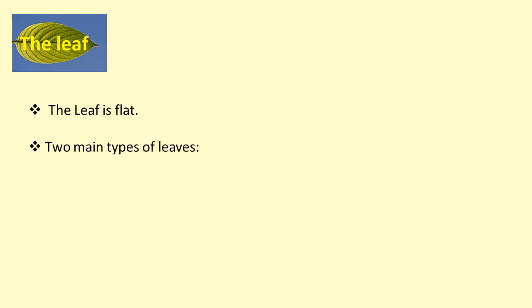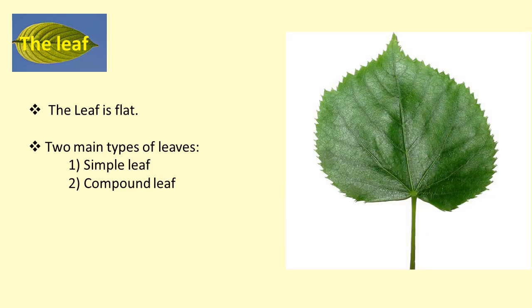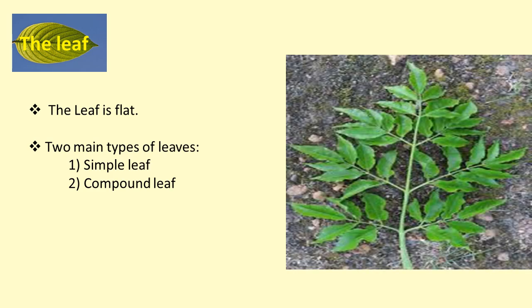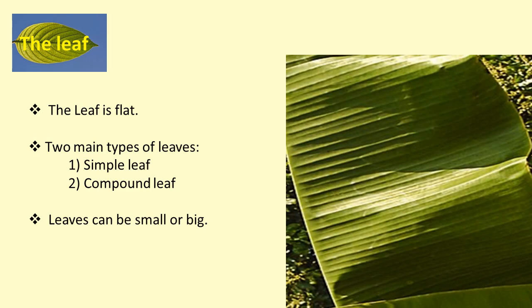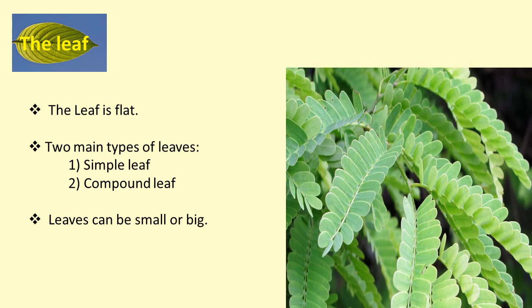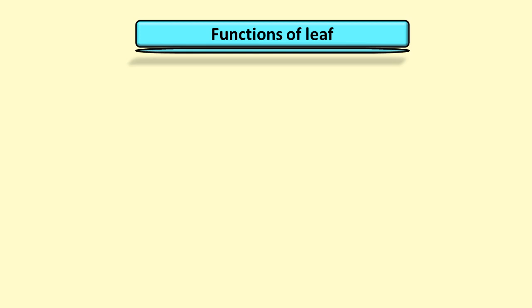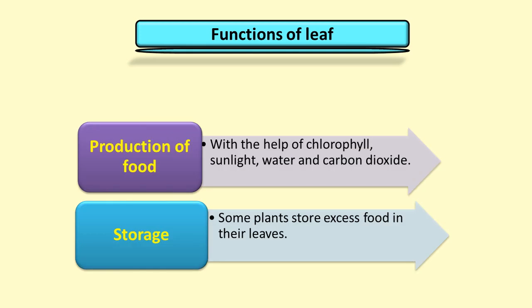Leaf. Leaves are flat, and the leaves of most plants are green in color because they contain chlorophyll. There are two main types of leaves: simple leaf and compound leaf. Leaves can be small or big — for example, banana leaf is very large while tamarind leaves are small. The main function of a leaf is food production. Leaves are also called the food factory or kitchen of the plant, because with the help of chlorophyll, sunlight, water, minerals, and carbon dioxide, leaves prepare their food. This process is called photosynthesis.